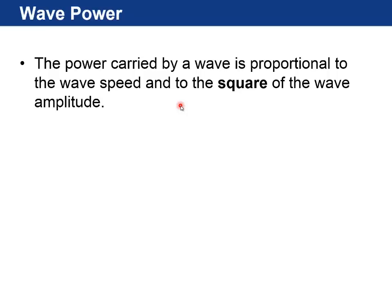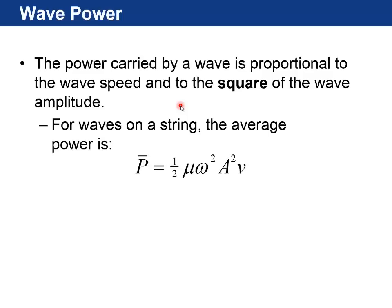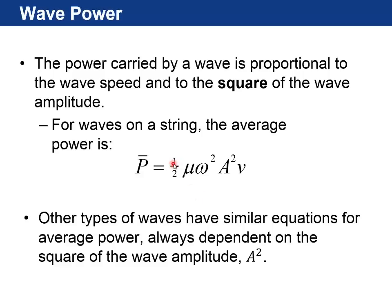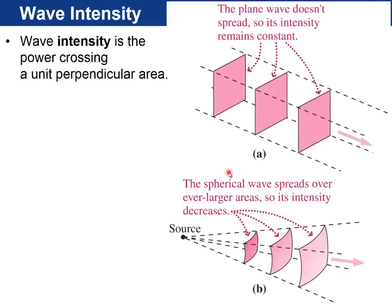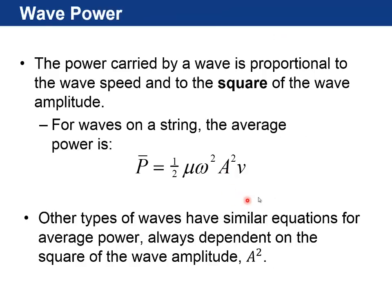Next section is wave power. The power carried by a wave is proportional to the wave speed but also the square of the wave amplitude. So for waves on a string, for example, it turns out to be 1/2 μ times ω squared times A squared times v. And other types of waves have similar equations for average power but they're always dependent on the square of the wave amplitude, A squared, as it is here.